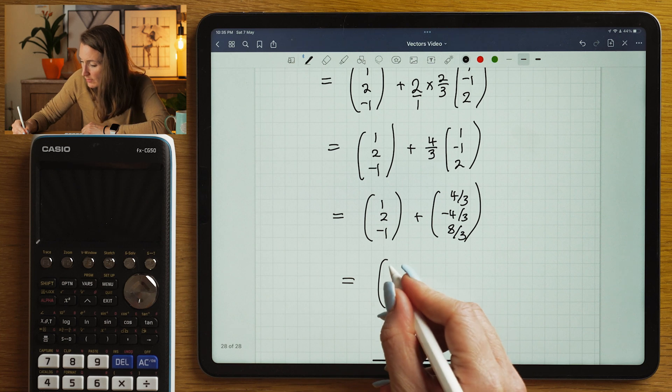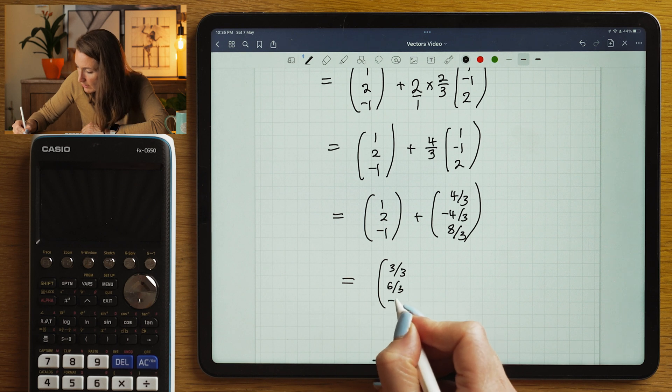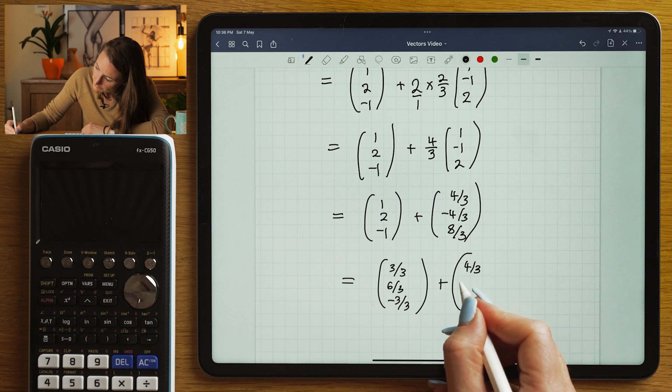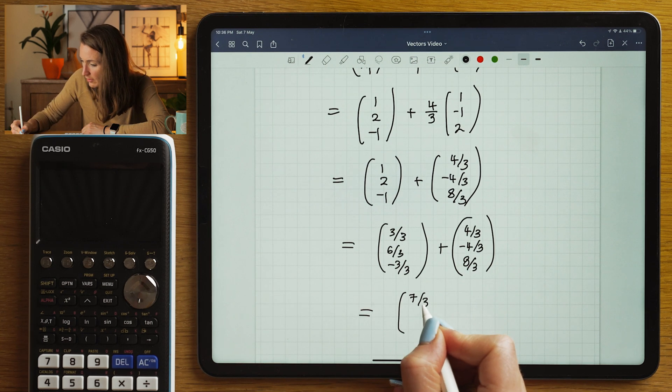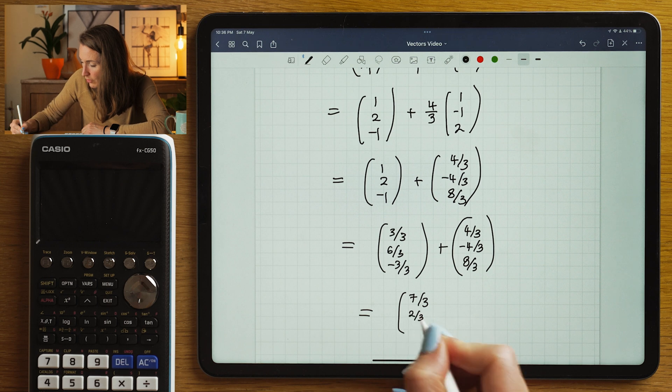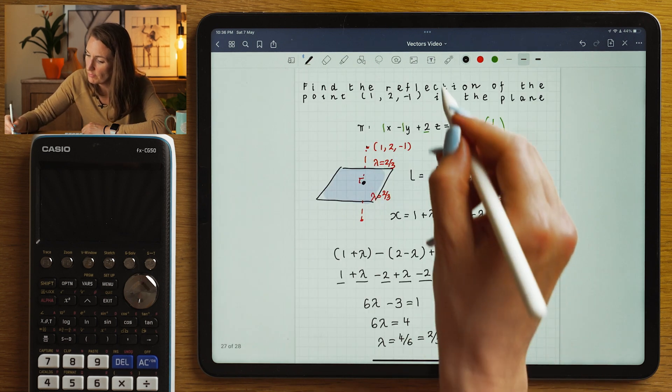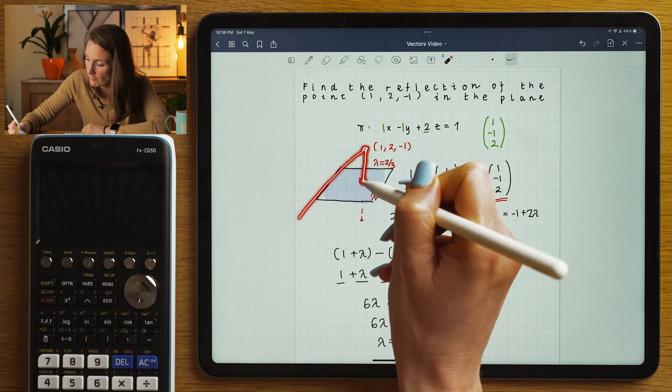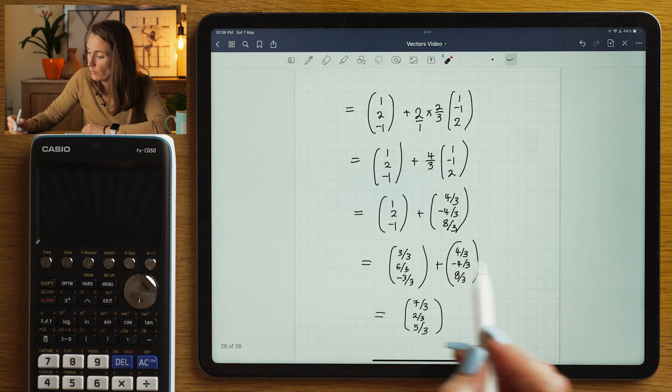So that's going to be 7/3, 2/3, and 5/3. So that means the vector that would take me from the origin to A, from A to here, and from here to here, which is equivalent to the vector from the origin directly to this point of reflection, would be this one.